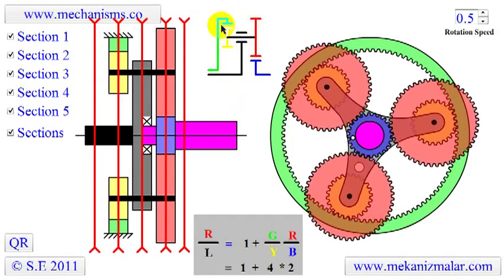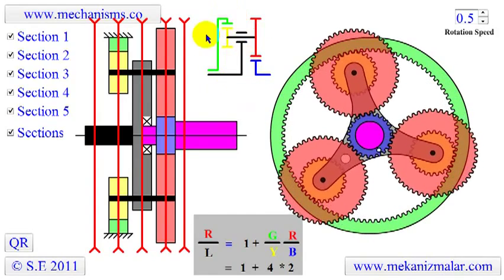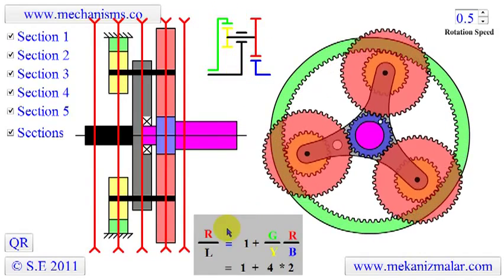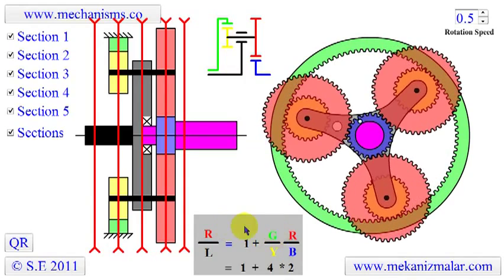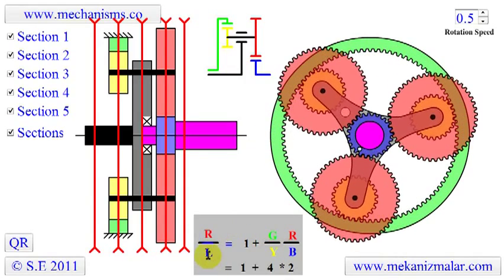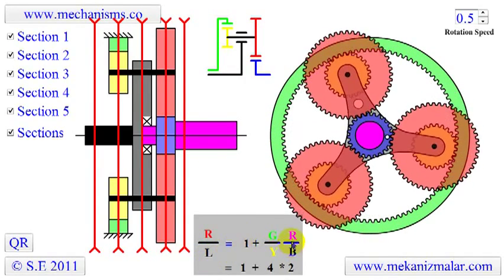We also show a graphical representation of this planetary gear mechanism. The gear ratio of the output at right to the input at left is given by the formula shown.